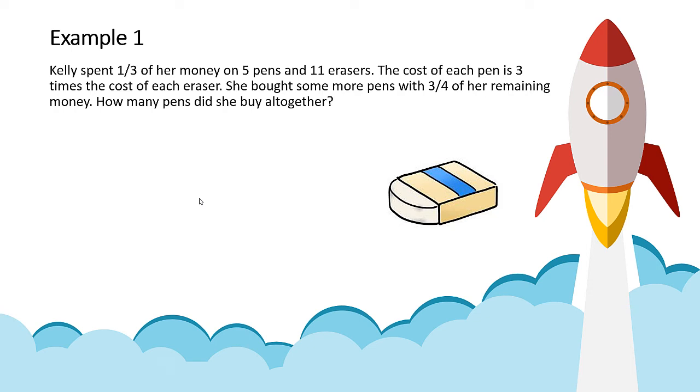Okay, so without further ado, let's go through an example over here. Kelly spent one third of her money on 5 pens and 11 erasers. The cost of each pen is 3 times the cost of each eraser. She bought some more pens with three-fourths of her remaining money. How many pens did she buy altogether?